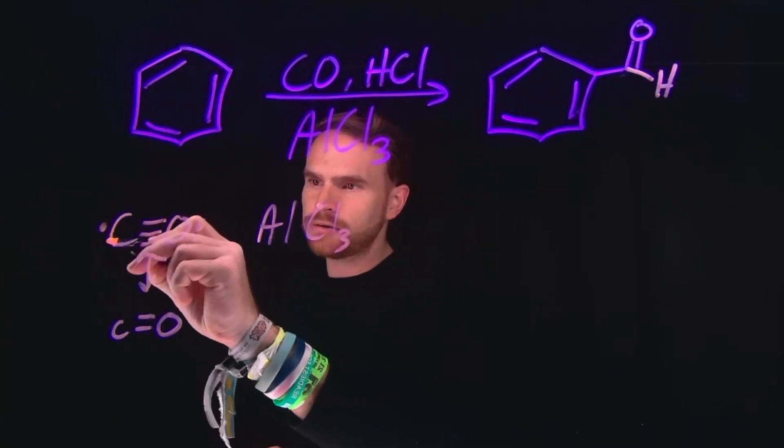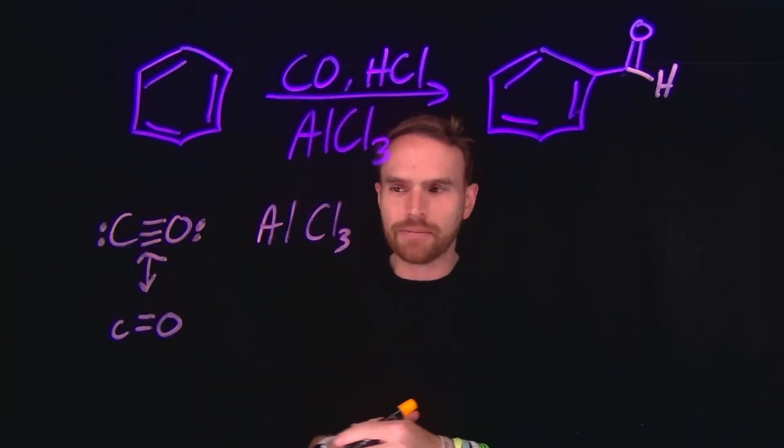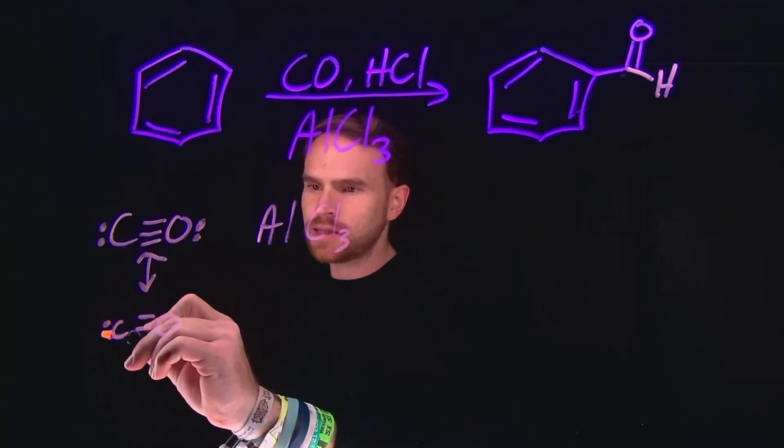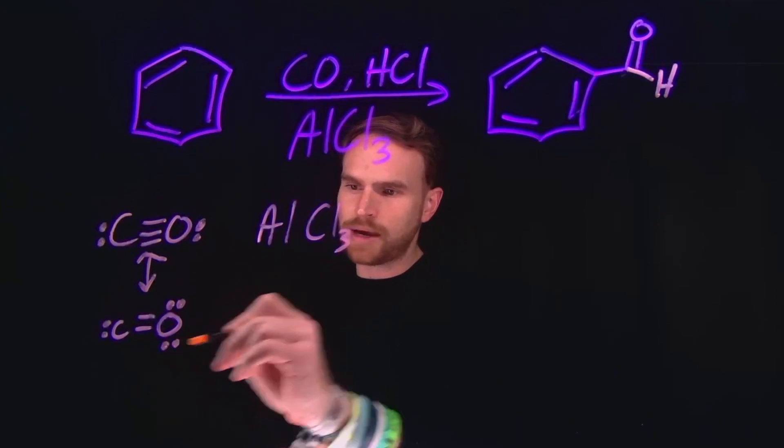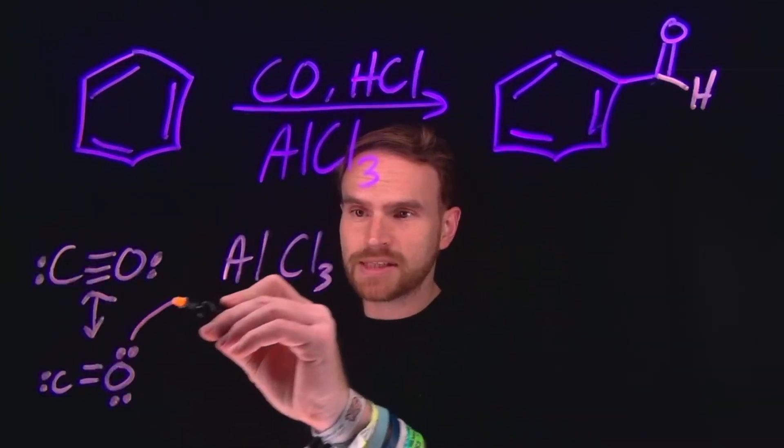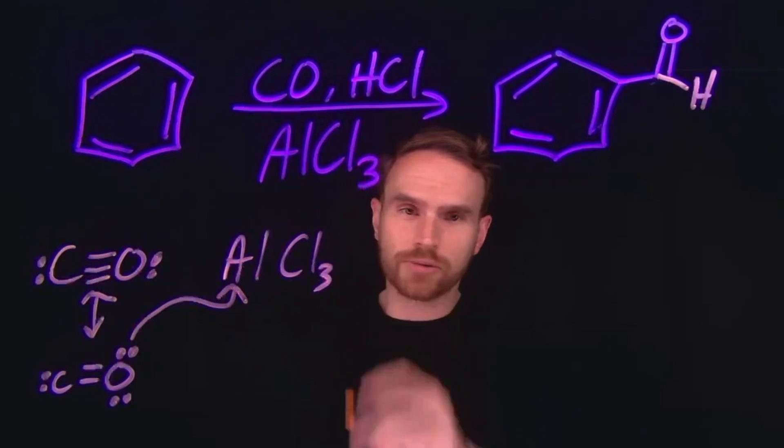We started with two lone pairs, each on each individual atom. But in this Lewis structure, the pi electrons have moved to being on oxygen, which gives it two separate lone pairs. And these lone pairs will come and attack the Lewis acid, aluminum trichloride.